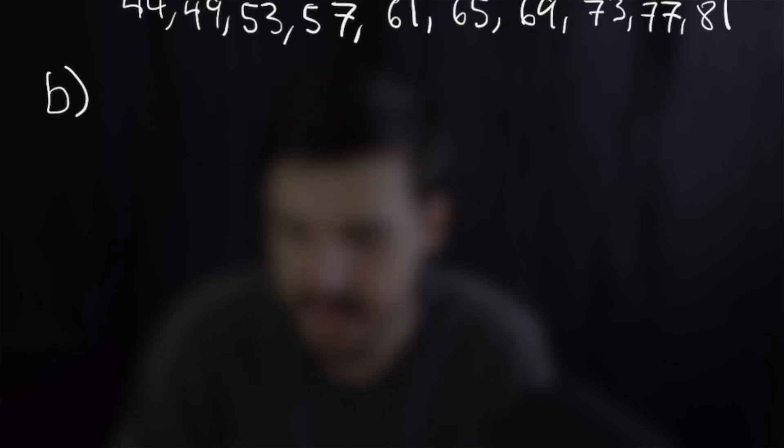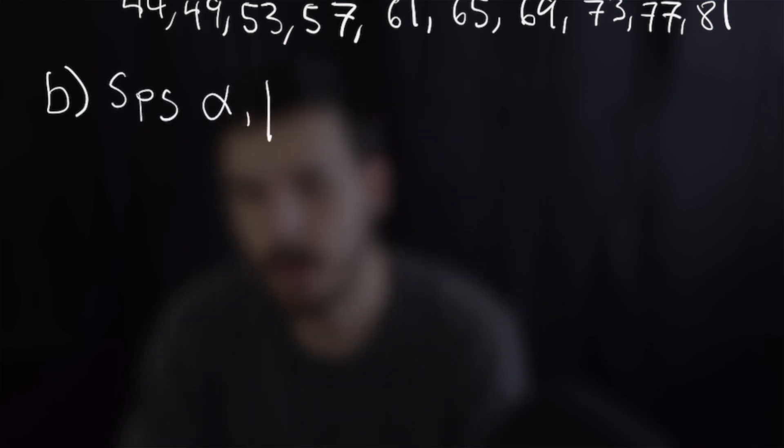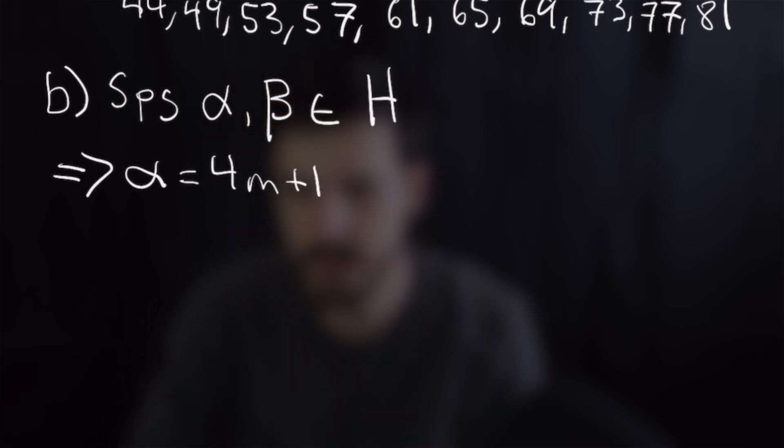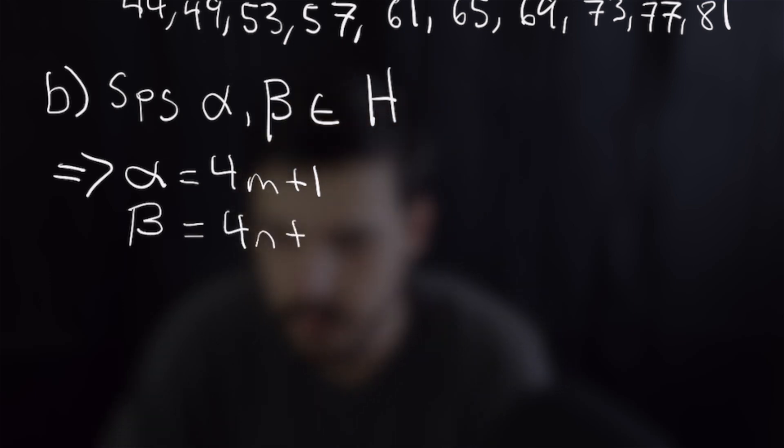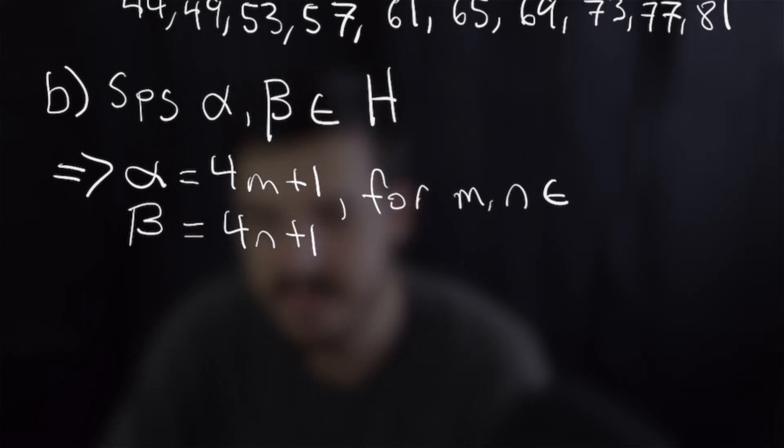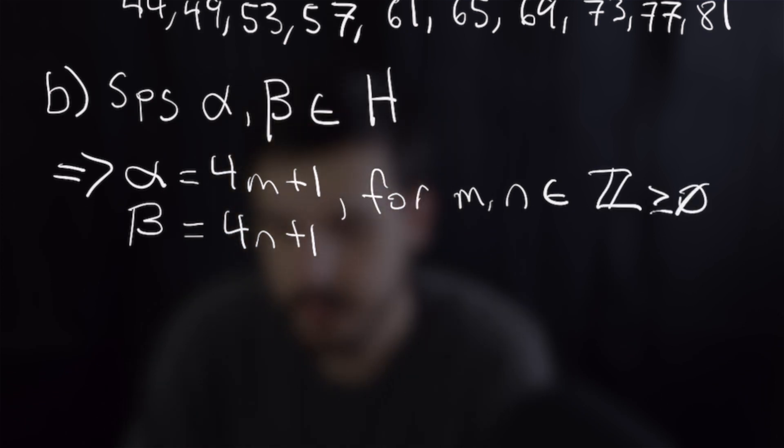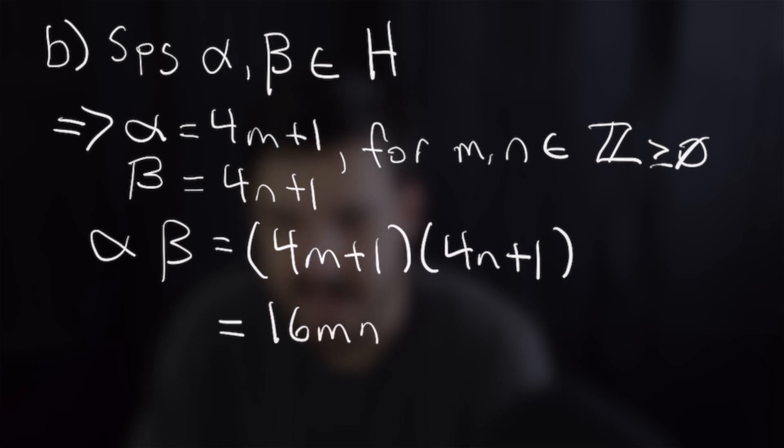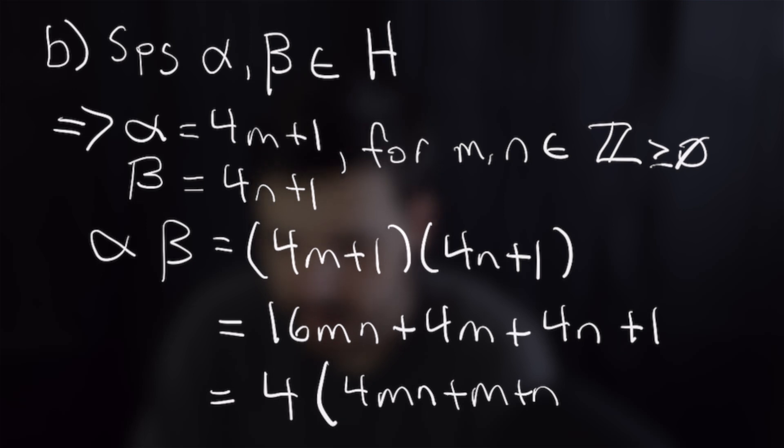Part b is to show that Hilbert numbers are closed under multiplication. So we're going to suppose that we have two numbers alpha and beta that are Hilbert numbers. That means we can write each of those in the form 4m plus 1. So we're going to have alpha is equal to 4m plus 1 and beta is equal to 4n plus 1 with m and n being non-negative integers. So we're going to multiply those two together which will give us alpha beta is equal to 4m plus 1 times 4n plus 1 and we will foil those out to get 16mn plus 4m plus 4n plus 1 and we can easily factor a 4 out of that to see that that is going to be of the form 4 times something plus 1 and thus it is closed under multiplication.